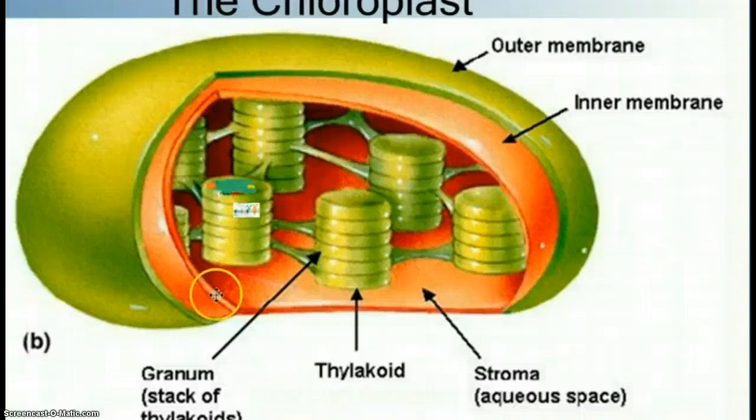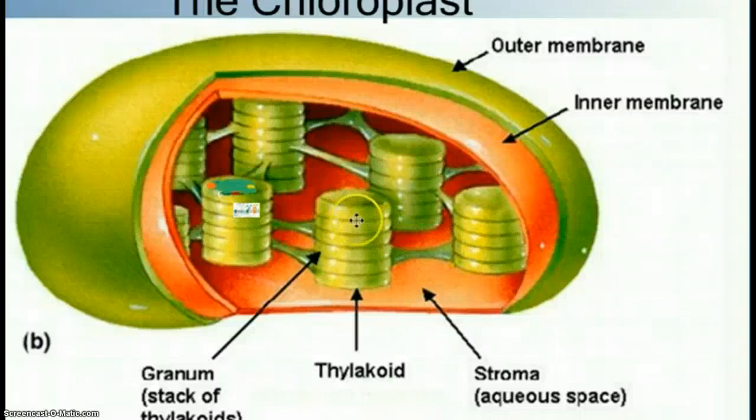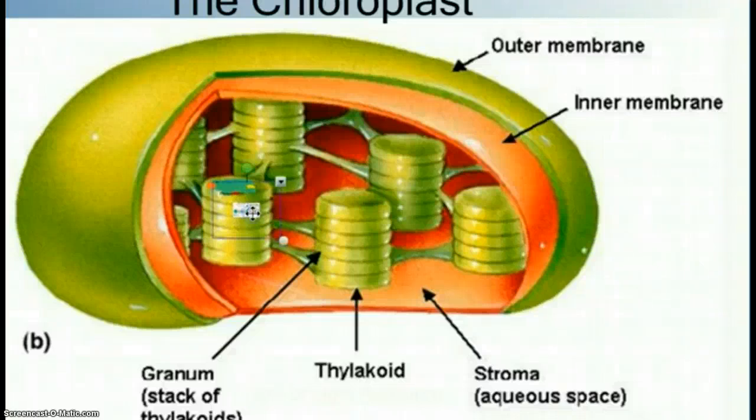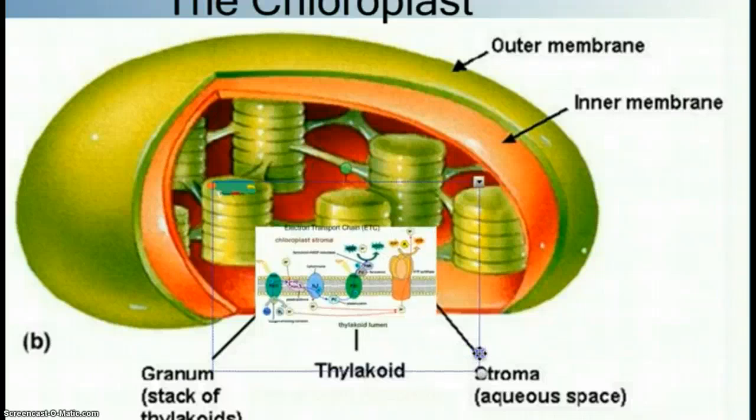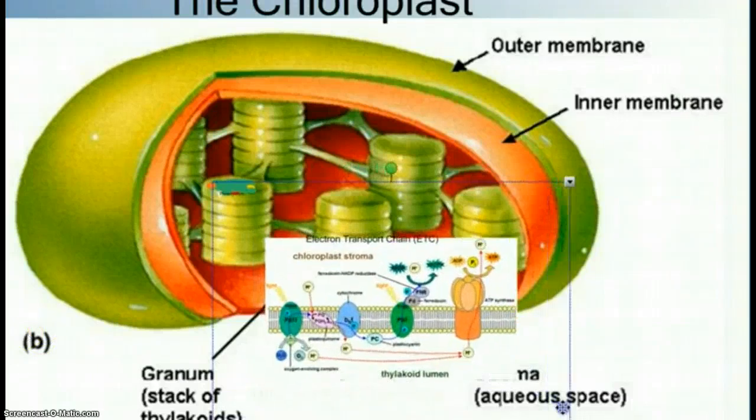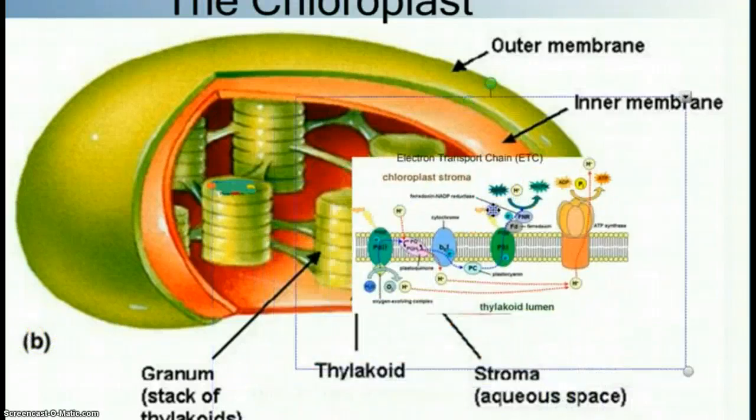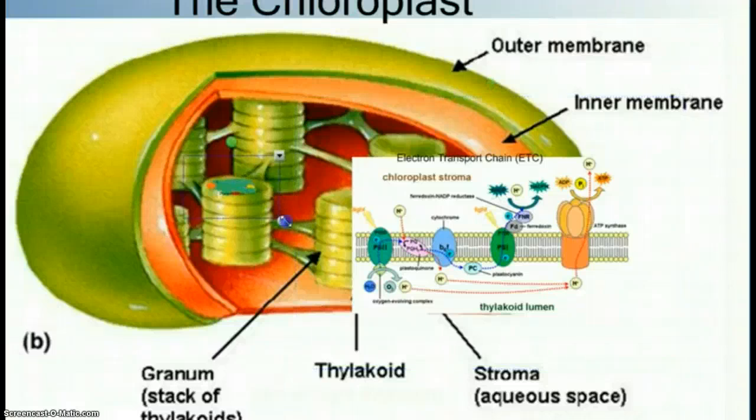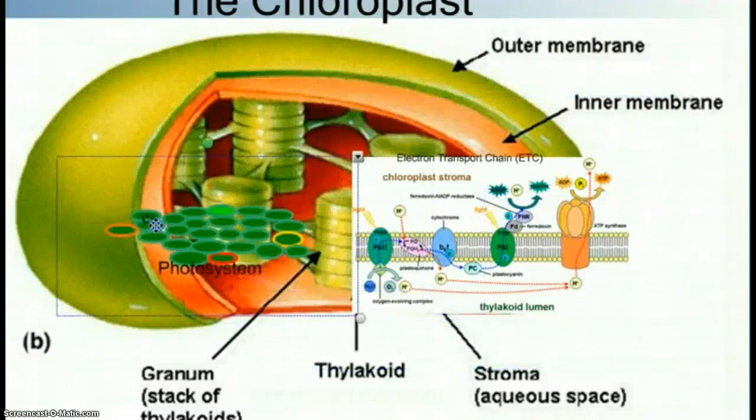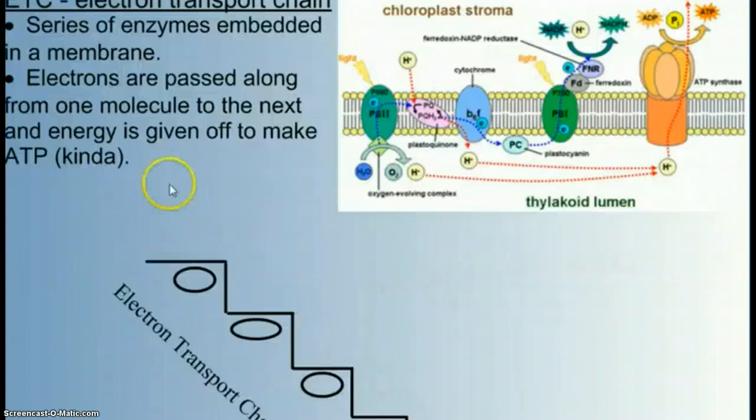Remember that all photosynthesis occurs inside the chloroplasts. Specifically, the light reactions occur in the thylakoid membrane. In the thylakoid membrane embedded there are two very important pieces of machinery: electron transport chains and photosystems. Electron transport chains are a series of enzymes embedded in the membrane.